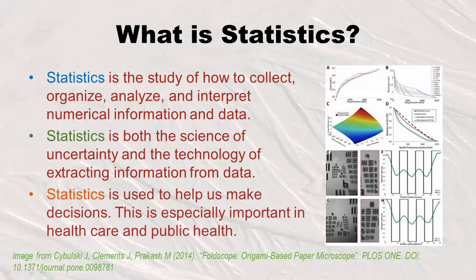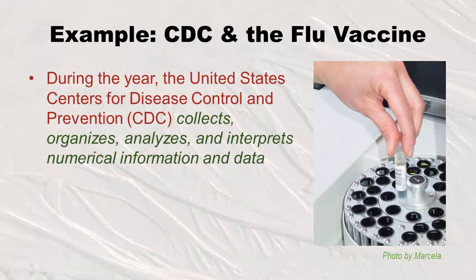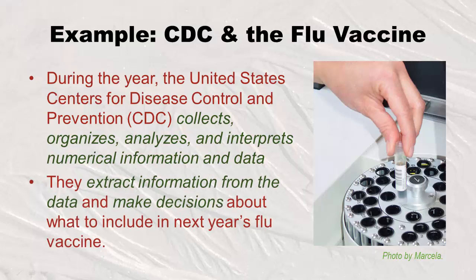Statistics is used to help us make decisions — not just whether to go to a restaurant, but important decisions in healthcare and public health. Think of the CDC. They spend the whole year studying different flu viruses that go around, organizing, analyzing, and interpreting numerical information about different influenza viruses. They extract that information and make decisions about what viruses to include in the next year's vaccine.